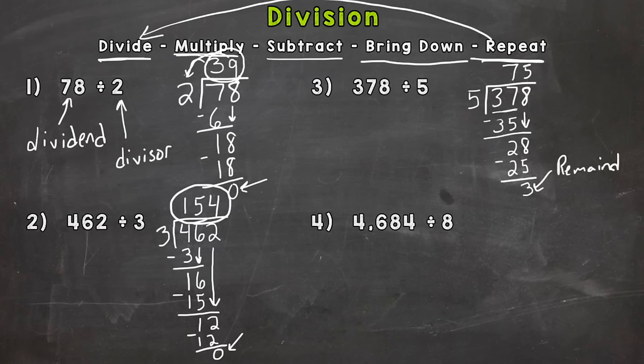So this 3 is a remainder. It's a number left over. Okay so when we did 378 divided by 5 it doesn't work out into a perfect whole number. We have 3 left over. So the answer is 75 remainder 3.